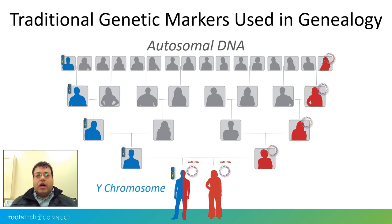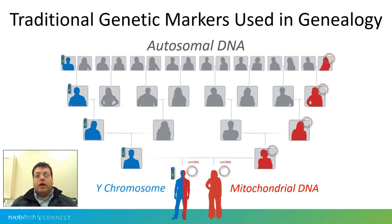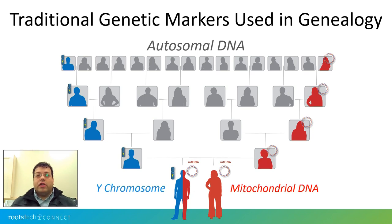In addition to the paternal line, we also have autosomal DNA, which is the majority of our DNA. We inherit it from all of our ancestors in different percentages, and it can be quite useful in learning about our origins and our genetic cousins. However, we lose quite a bit at every generation, so autosomal DNA becomes more complicated when trying to pinpoint it to a specific ancestor. Like the Y chromosome, we also have mitochondrial DNA. With mitochondrial DNA and the Y chromosome, we know exactly where they come from in our family tree — each represents one specific line.